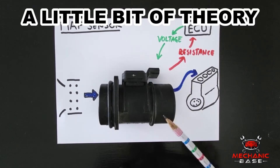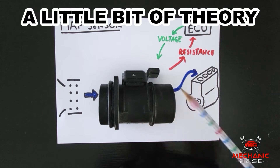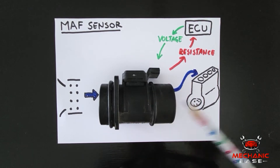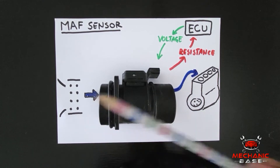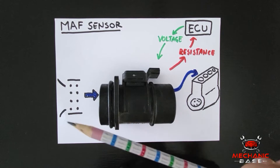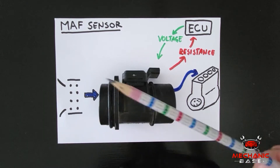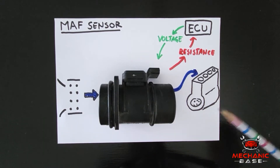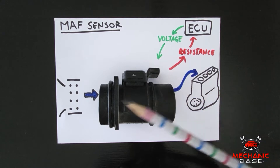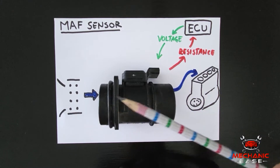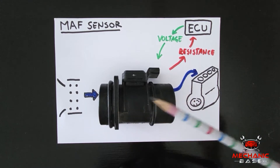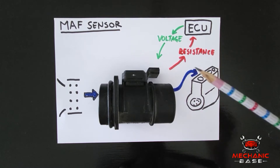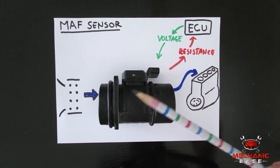First, let's take a brief moment to see how the MAF sensor works. The MAF sensor in every car is located between the air filter and the engine intake manifold. Here it measures the amount of air flowing towards the engine, and it does this in a quite simple way.